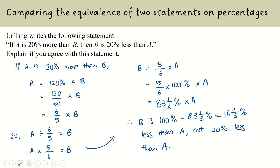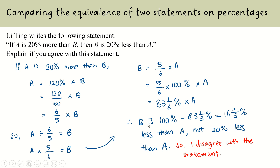Therefore, in this particular case, we conclude that we disagree with the statement, as verified by the calculation above. It is not sufficient just to show the numbers — you need to answer the question directly since it asks whether you agree or not. Do conclude with the statement that you disagree.